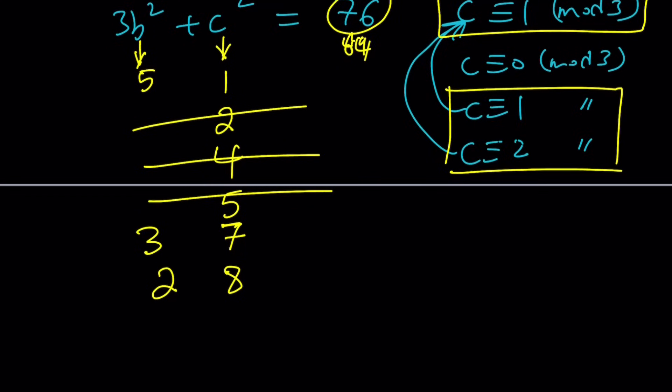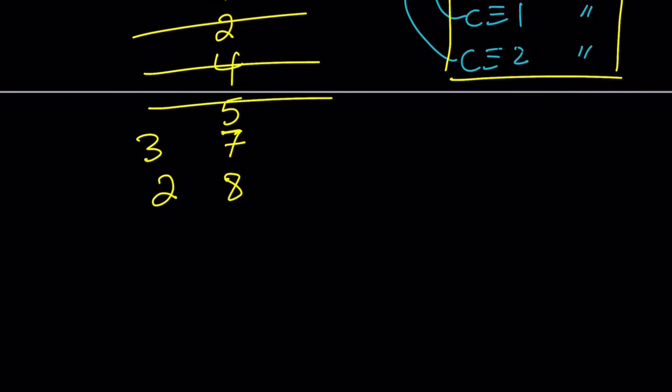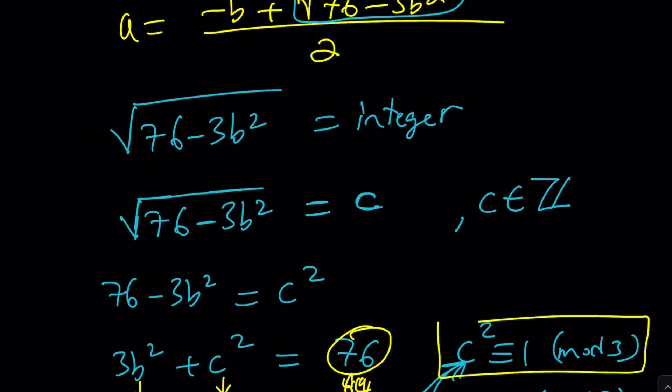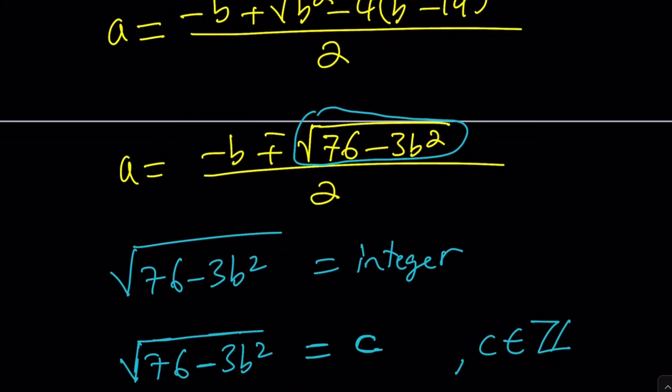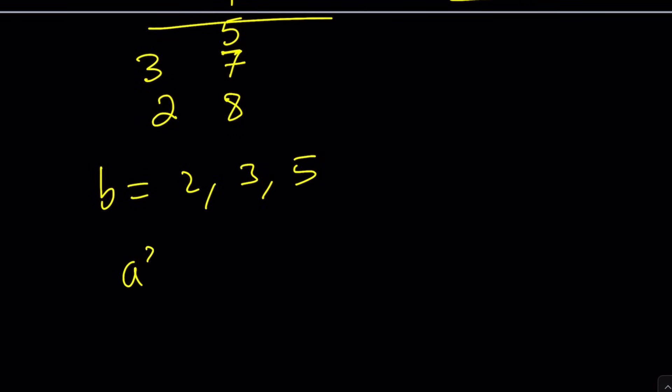Which means, and we don't really care about c. Let's just use the values for b. b can be 2, 3, or 5. Now, how do you find a from here? By substitution, right? You can directly substitute it, or you can use the original problem. What is the original one? a squared plus ab plus b squared is equal to 19.